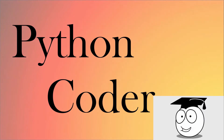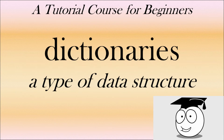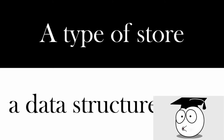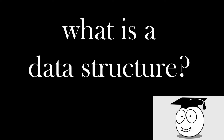Would you like a simple explanation of dictionaries? Well, what is a dictionary? It's a type of store — something you can put things in and take them out — also called a data structure.